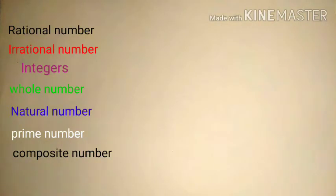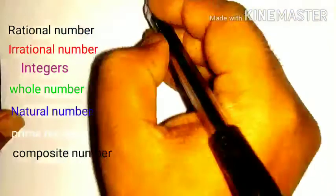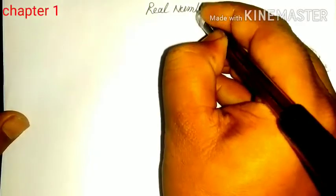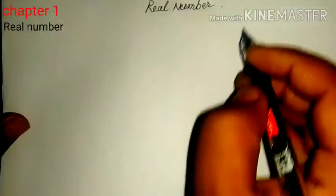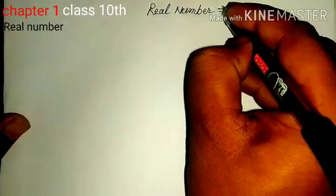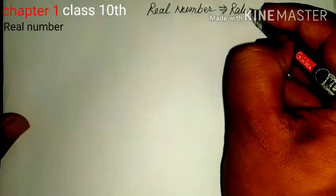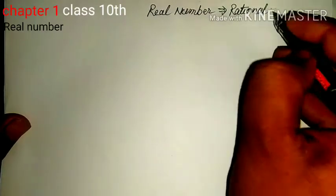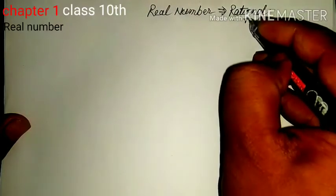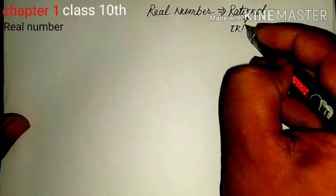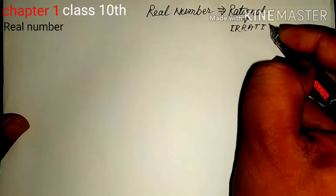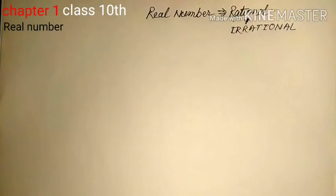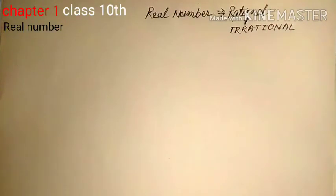Today, firstly we will discuss about real numbers. What is a real number? A real number is the combination of rational and irrational numbers. On the other hand, we can say a number which we can represent on a number line is known as a real number.